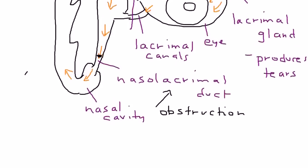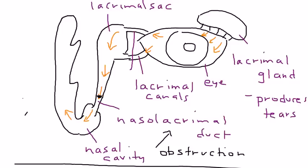So the lacrimal glands produce tears. The tears then go from the eye surface to the lacrimal sac, then to the nasolacrimal duct, and into the nasal cavity.